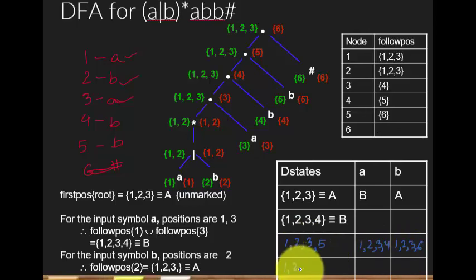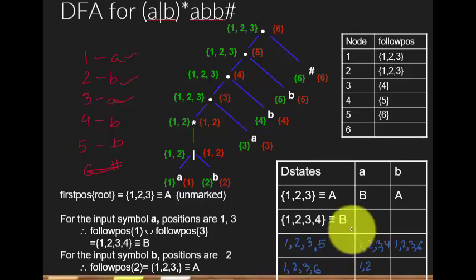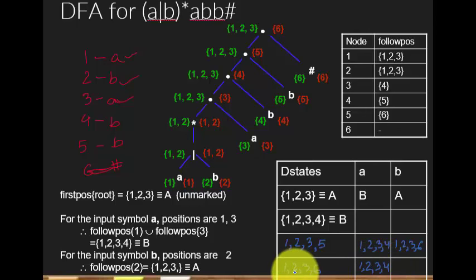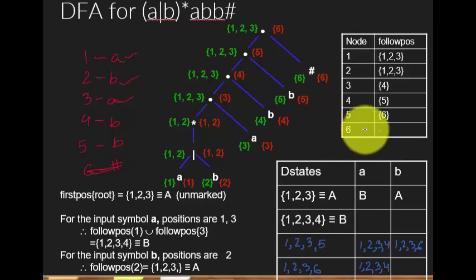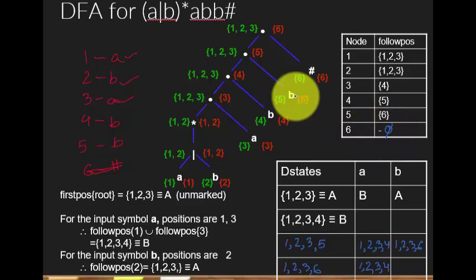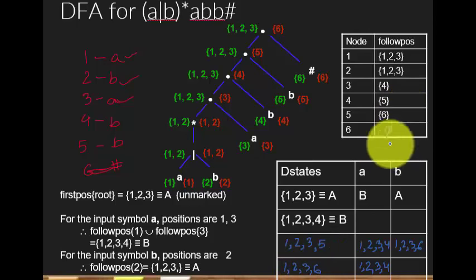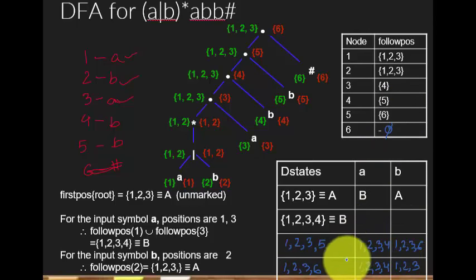From state {1,2,3,6}: positions 1 and 3 are A, position 2 is A's complement — but 6 is hash, which we don't consider. On A: followpos(1) ∪ followpos(3) = {1,2,3,4}. On B: followpos(2) = {1,2,3} (since followpos(6) is empty). So this is the final DFA — no new states are generated. We check the answer and it matches.